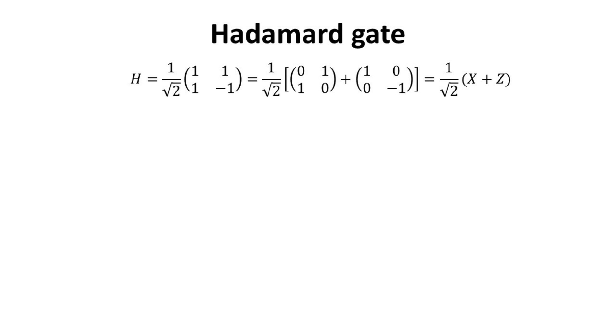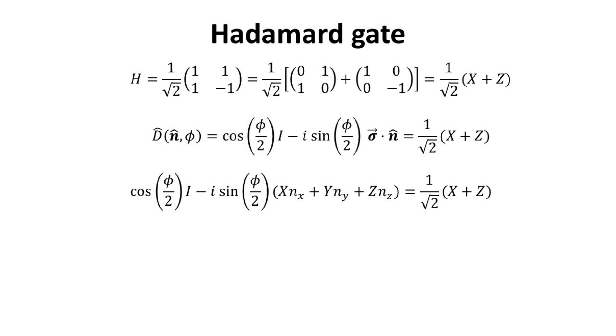From the matrix form of the H gate, it is easy to see that the H gate is a linear combination of the X and Z gates. We seek to find the rotation angle phi and axis N in the spin one-half rotation matrix that yields the H gate. Expanding out the dot product, and comparing both sides of the equation, we can deduce that the angle phi is equal to pi, and the axis is lying diagonal on the XZ plane, as expected by the form of the H matrix.